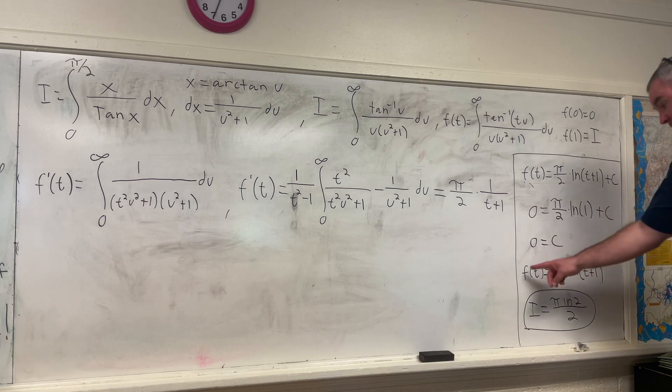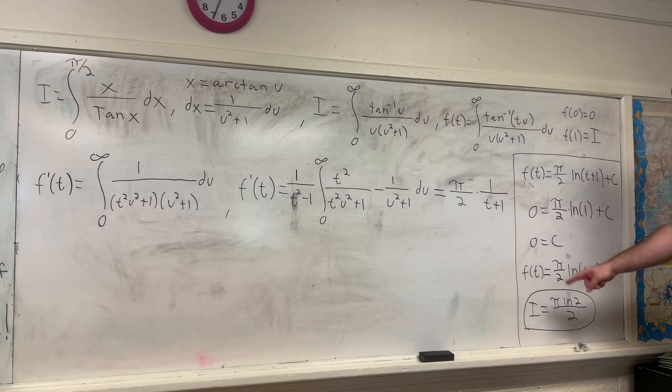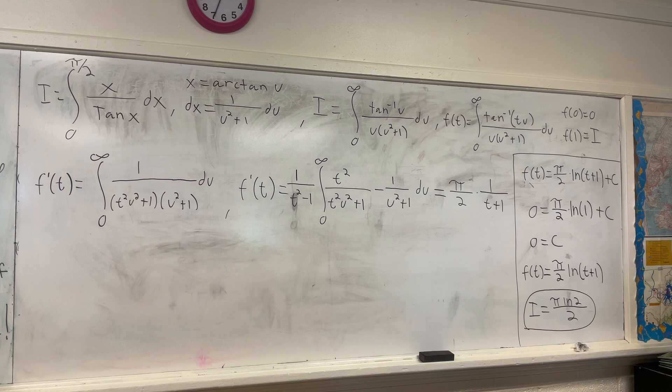So our final expression for f of t is f of t equals pi over 2 times the natural log of t plus 1. And plugging in 1 to get i gives us that i is equal to pi times the natural log 2 over 2. So that's it.